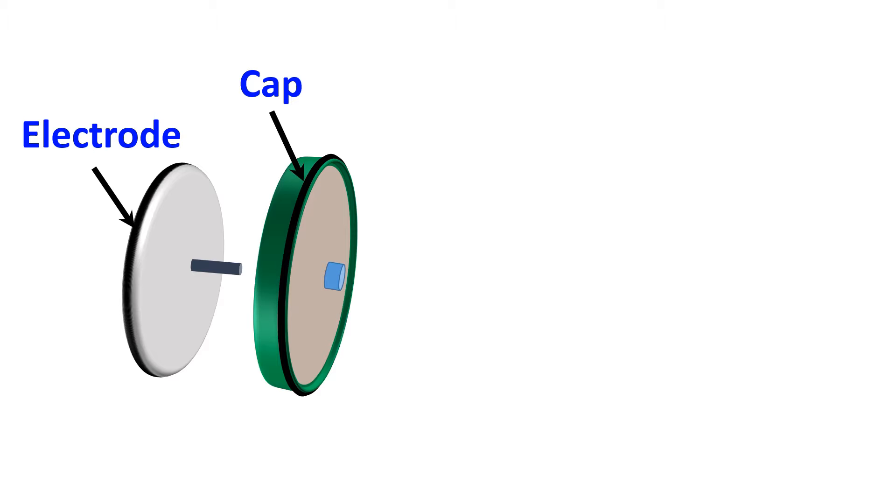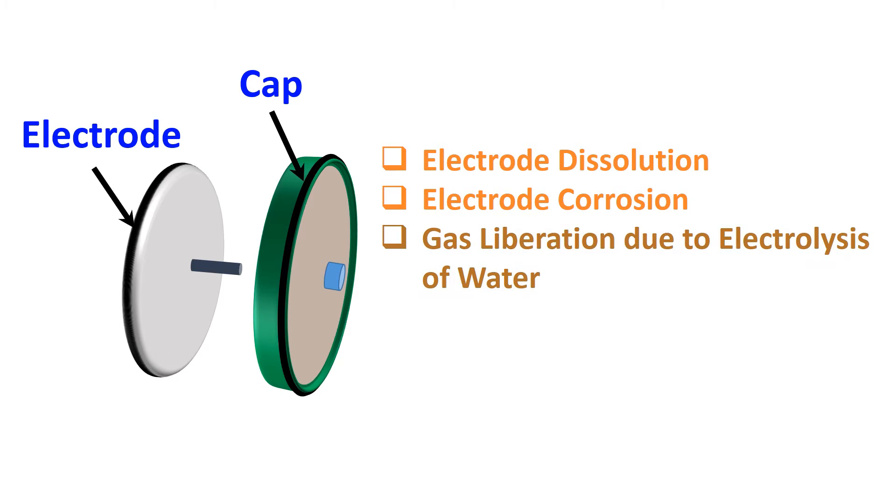Five important aspects need to be understood for electrodes: first, electrode dissolution; electrode corrosion; gas liberation due to electrolysis of water; liberation of volatile components; and electrode fouling.